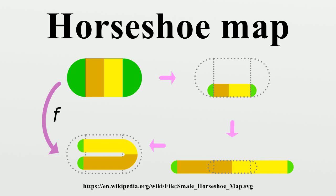The horseshoe map F is a diffeomorphism defined from a region S of the plane into itself. The region S is a square capped by two semi-discs. The action of F is defined through the composition of three geometrically defined transformations.